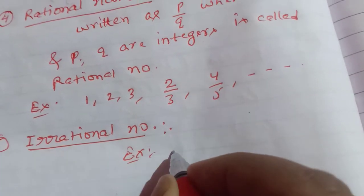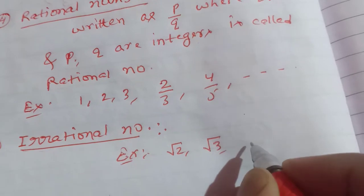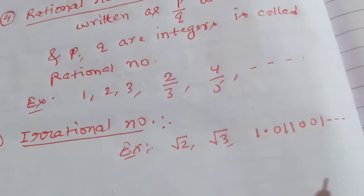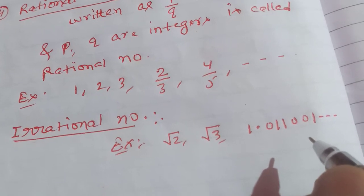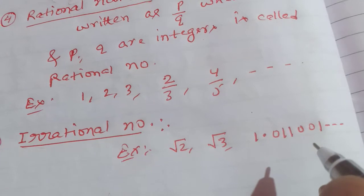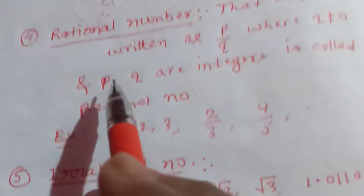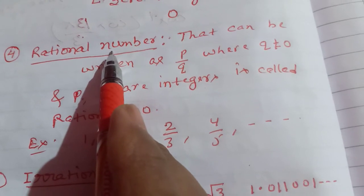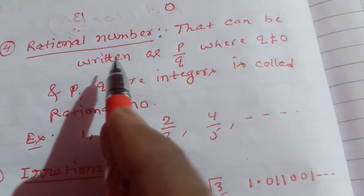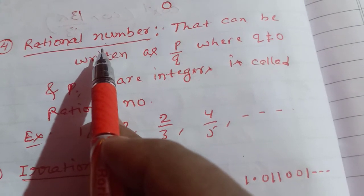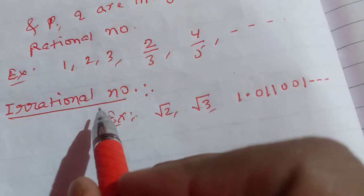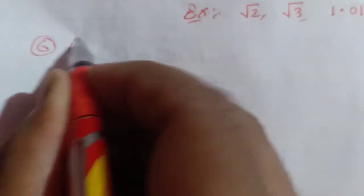Examples of irrational numbers: under root 2, under root 3. The decimal expansion of an irrational number is non-terminating and non-repeating, which was discussed in Class 9th. The decimal expansion of a rational number is terminating and recurring, whereas the decimal expansion of an irrational number is non-terminating and non-recurring.